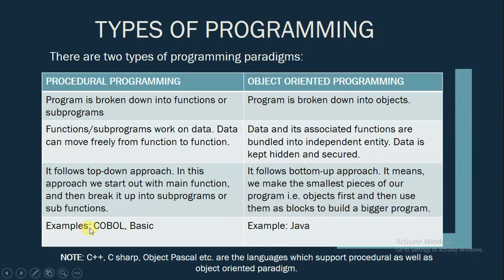Some examples of procedural programming paradigm are COBOL and BASIC, and one of the very wonderful examples of object oriented programming is Java. There are some languages which support both procedural as well as object oriented paradigms, and these are C++, C-sharp, Object Pascal, etc.